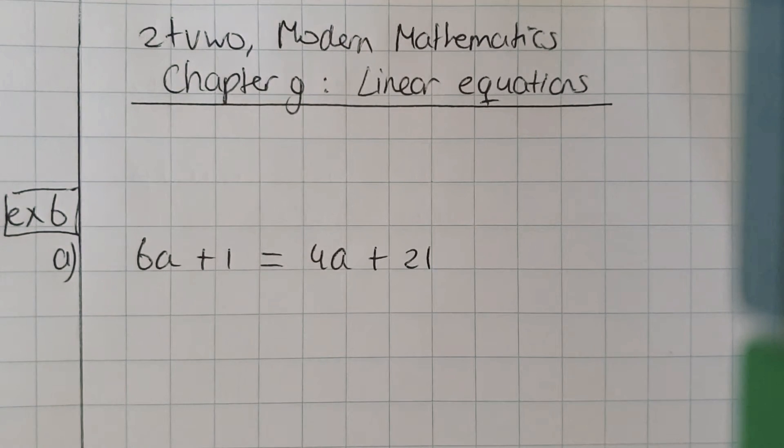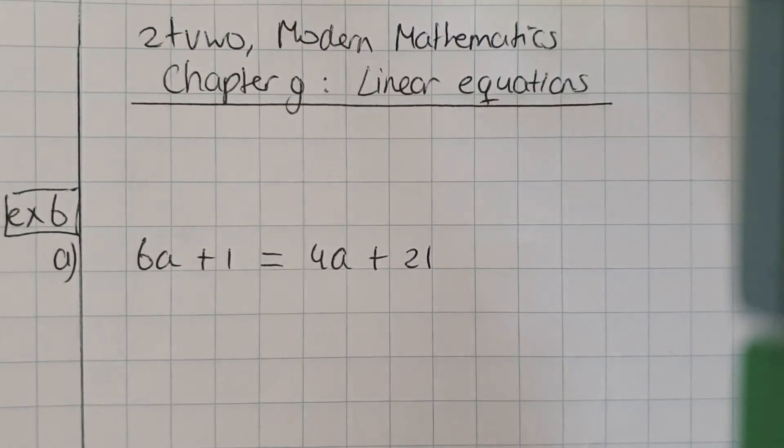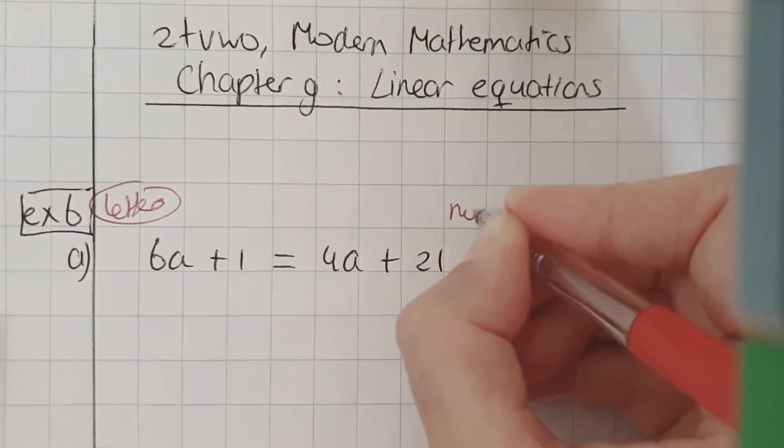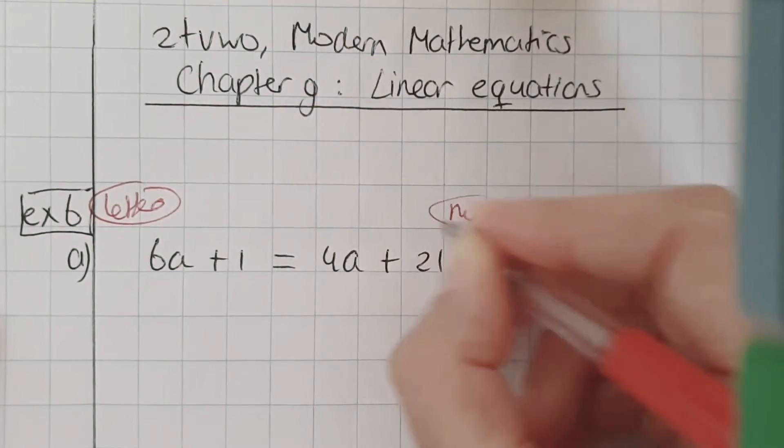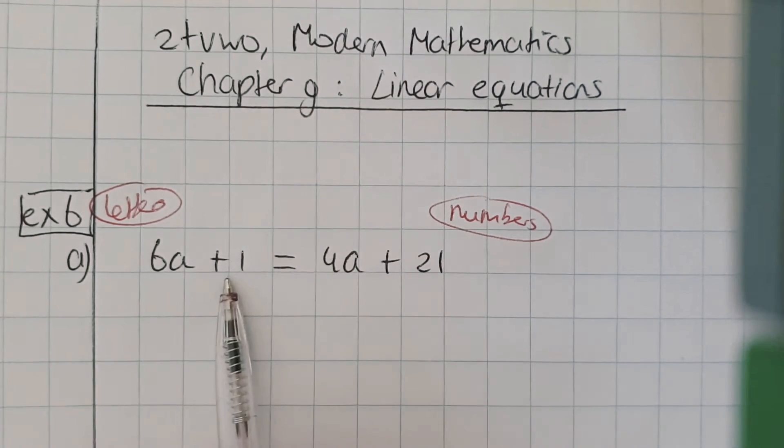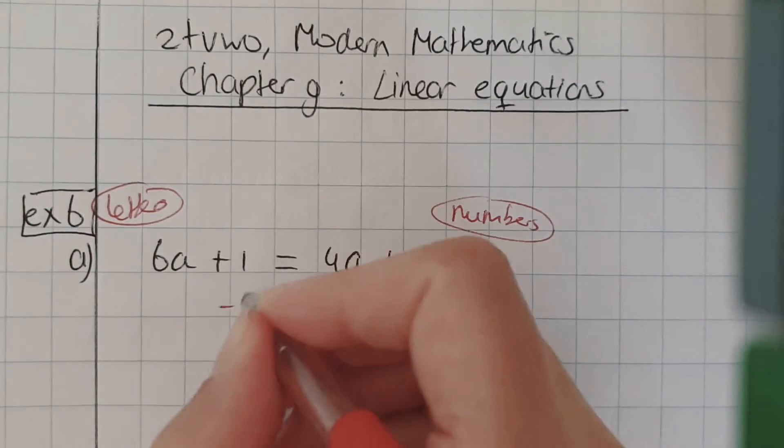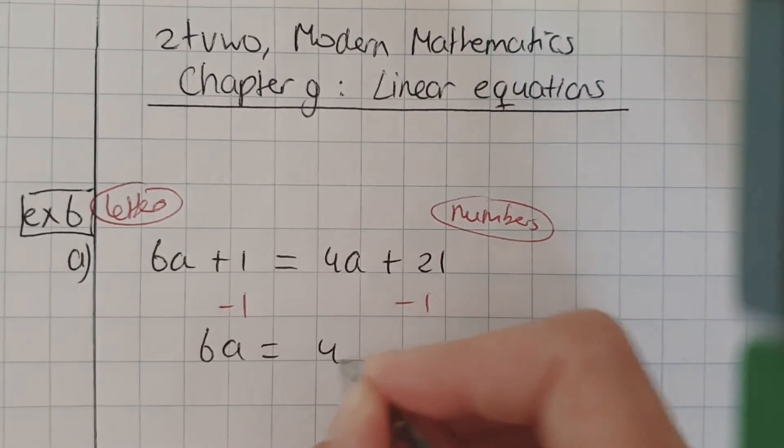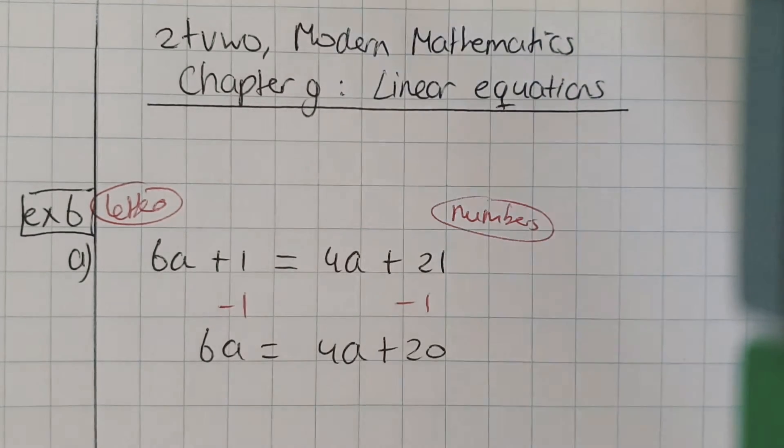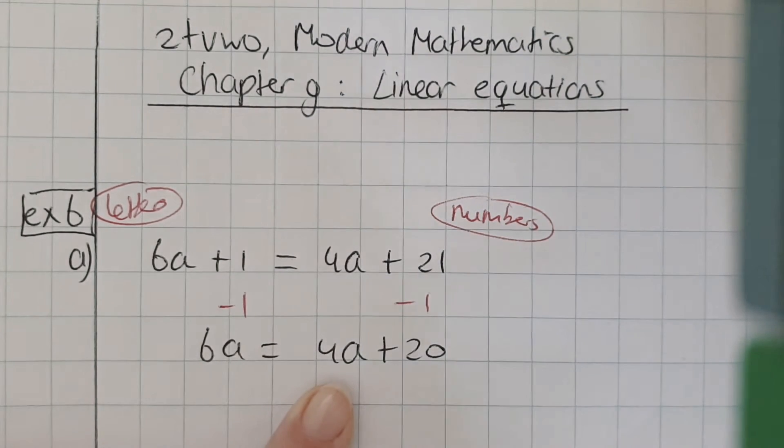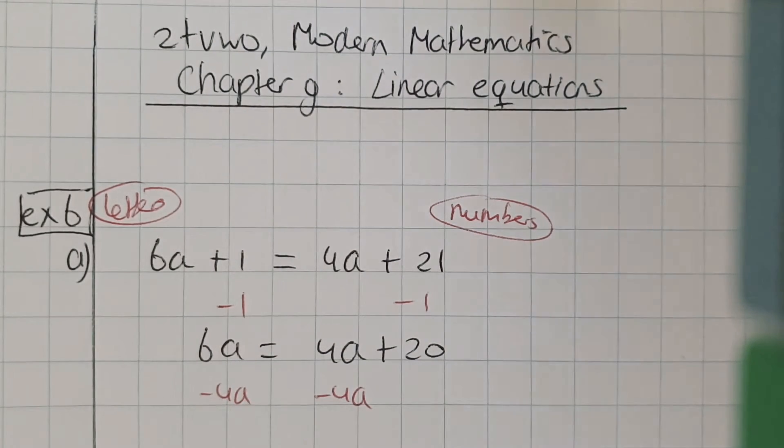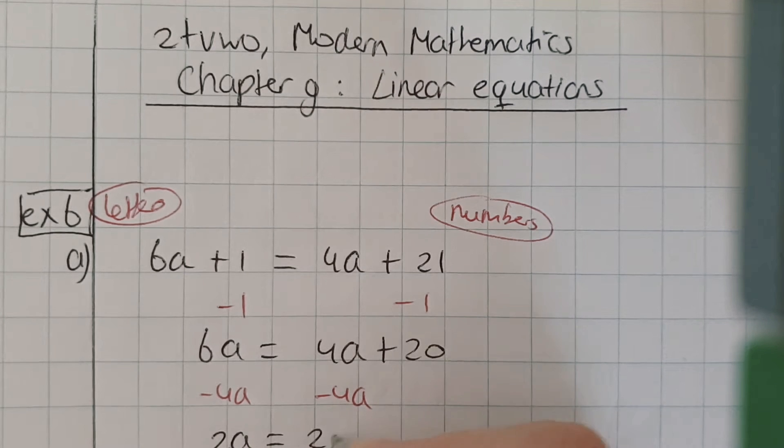Exercise 6a is 6a plus 1 equals 4a plus 21. Now, all the letters on this side and all the numbers on this side. So that means that plus 1 I have to put on the other side. Minus 1 on this side, minus 1 on this side. Then 4a has to go to the other side. So minus 4a here and minus 4a there. So 2a equals 20.